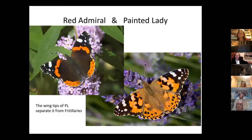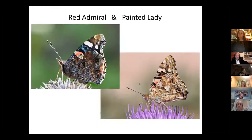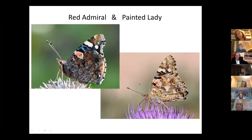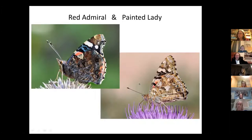The red admiral caterpillars eat nettles and also something called pellet tree. The underside of the red admiral and the painted lady can be a bit tricky — in poor light they're not awfully easy to tell apart, but the red admiral is obviously darker. The same pattern in the wing tips carries through to the underside, and there are eye spots along the edge of the hind wing on the painted lady. If you find it sitting still, it's worth looking at these wing edges with the little eye spots on the hind wing.